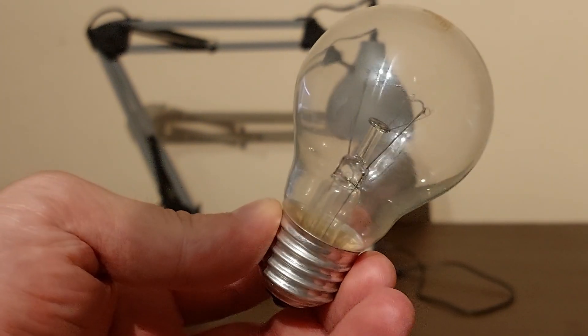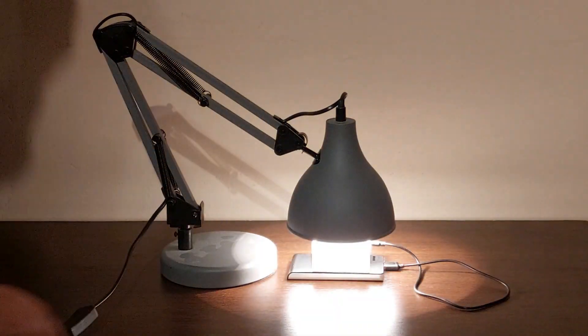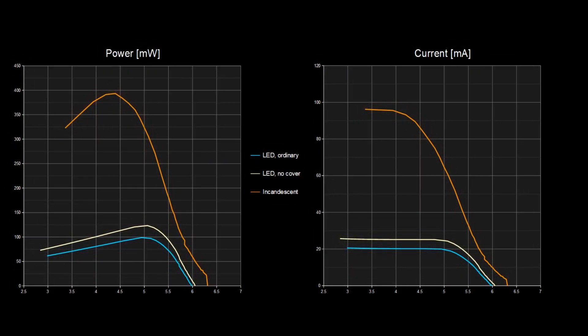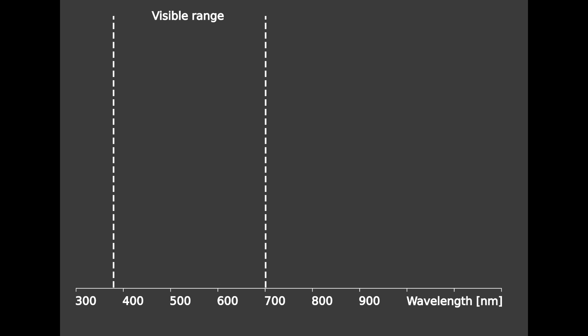So maybe a different light source. How about this old school incandescent light? Okay, that looks a lot better. At least we get somewhere close to nominal parameters of this solar cell. But how is that possible? LED bulb seems even a bit brighter than this one.